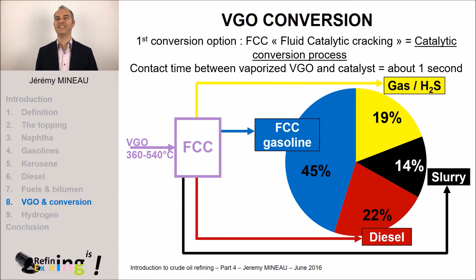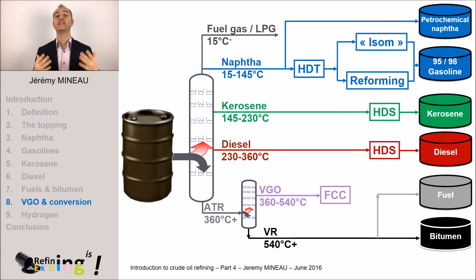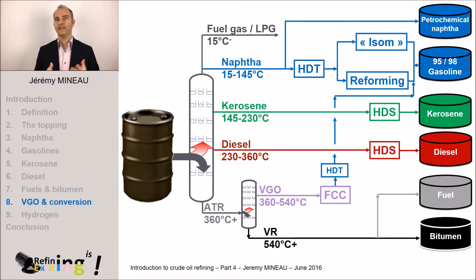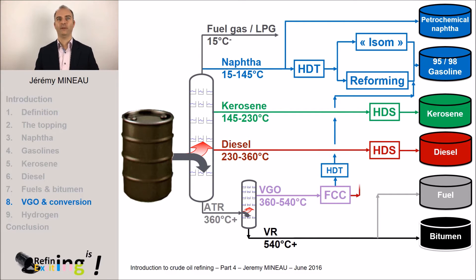Let's see how this FCC is integrated within the refinery scheme. The gasoline produced in the FCC contains sulfur, because the FCC catalyst only converts molecules but does not remove the sulfur. It will thus be necessary to hydro-treat this FCC gasoline before blending it in the gasoline pool. Besides, this gasoline was produced at high temperature, so it contains a high proportion of aromatics and thus a high octane rating. This makes it possible to blend the FCC gasoline directly into the gasoline pool without reforming treatment. The diesel cut also has to be hydro-treated before blending in the diesel pool. As far as slurry is concerned, it will be a good raw material to produce fuel oil.